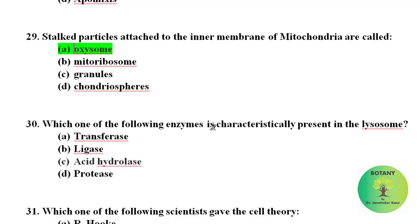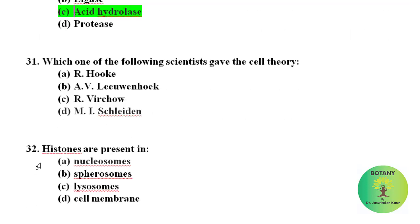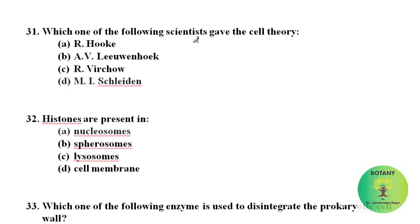Which of the following enzymes is characteristically present in the lysosomes? Lysosomes' principal enzyme is acid hydrolase. Acid hydrolases are hydrolytic enzymes that are active under acidic conditions. Which one of the following scientists gave the cell theory? Cell theory was given by M. Schleiden. Histones are present in nucleosomes. Nucleosomes are the basic packing unit of DNA which are built from histone proteins around which DNA is coiled.